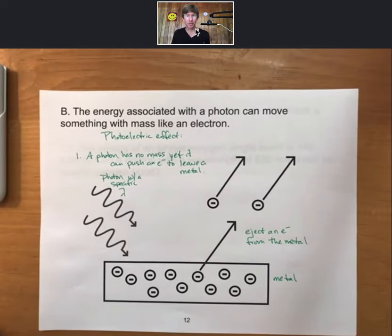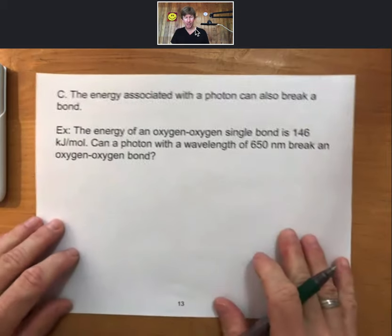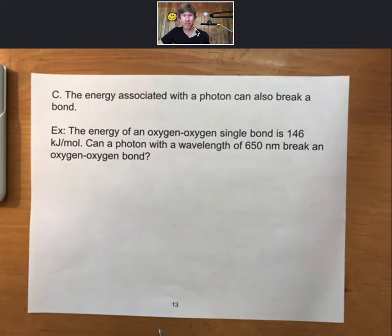This is a photon's particle-like property. As such, the energy associated with a photon can also break a bond. As an example, the energy of an oxygen-oxygen single bond is 146 kilojoules per mole. The question we're going to ask is, can a photon with a wavelength of 650 nanometers break an oxygen-oxygen bond? This question is similar to at least one that you'll find on the homework, if not more than one, and potentially the exam.